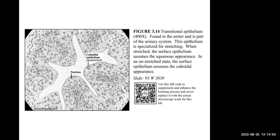Here is transitional epithelium found in the ureter and urinary system. This epithelium is specialized for stretching — it assumes a cuboidal type shape when unstretched. We're looking at this under 400 times magnification, so we're probably in the 40x objective lens.